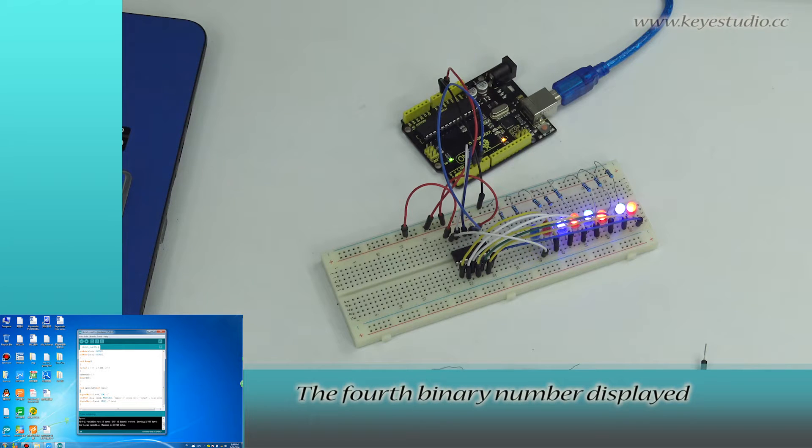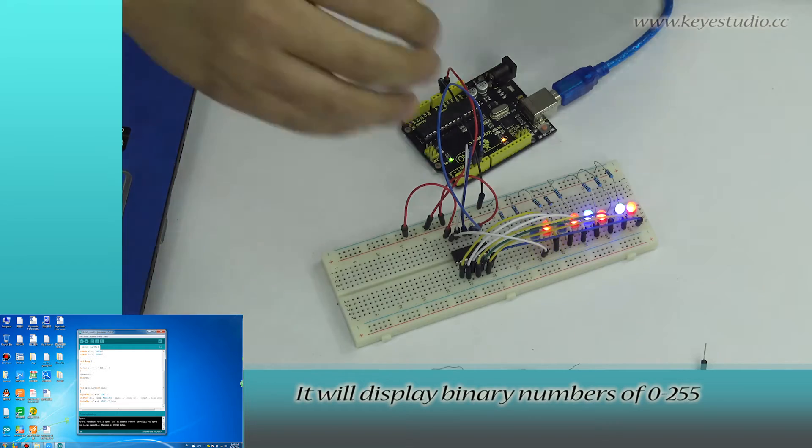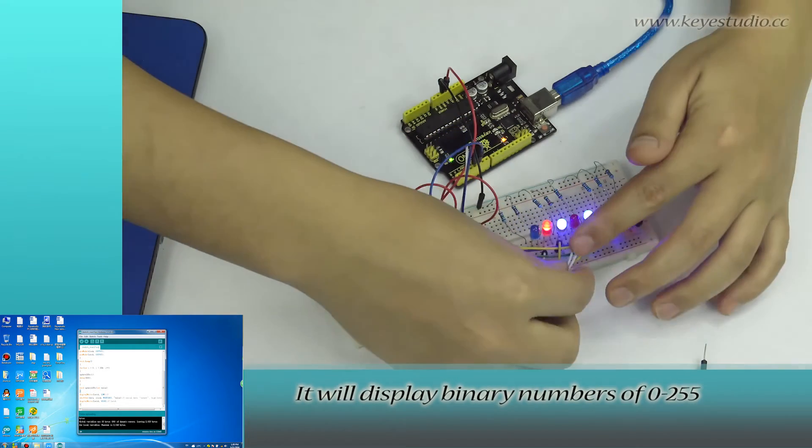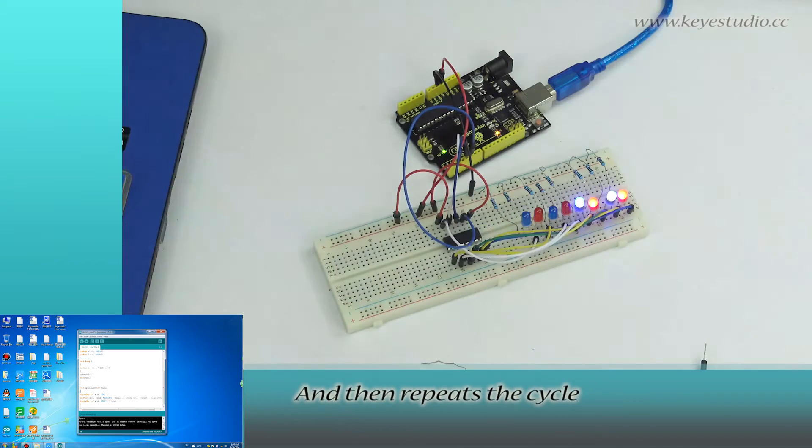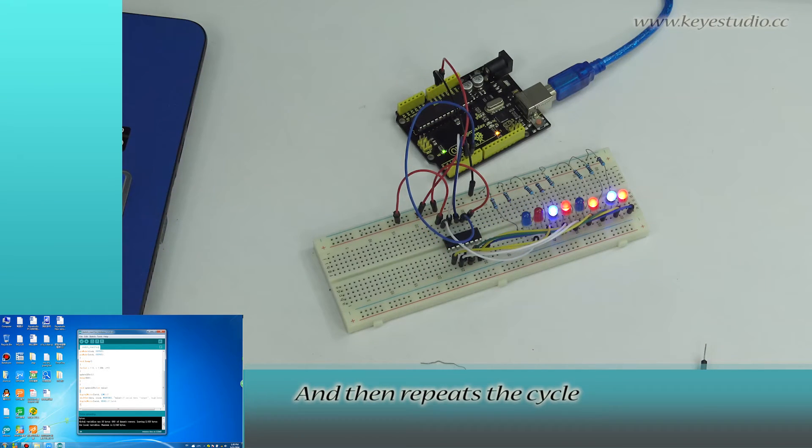The fourth binary number displayed is 11 for number 3. That is, 11 you get. It will display binary numbers of 0 to 255 as a cycle. And then, repeat the cycle.